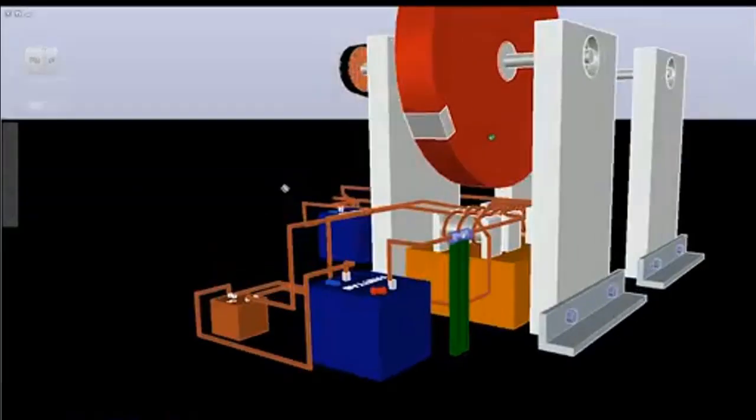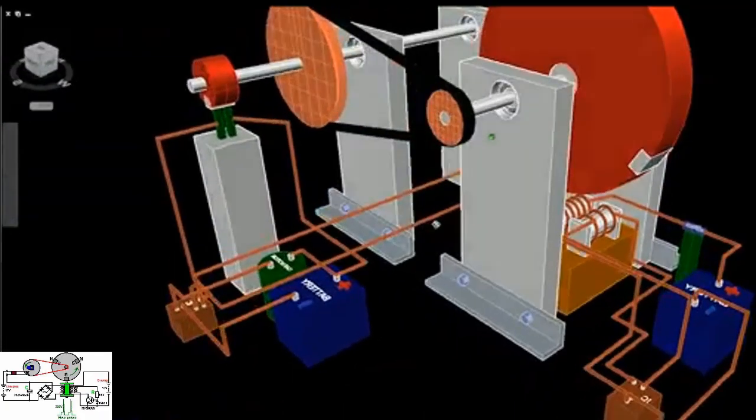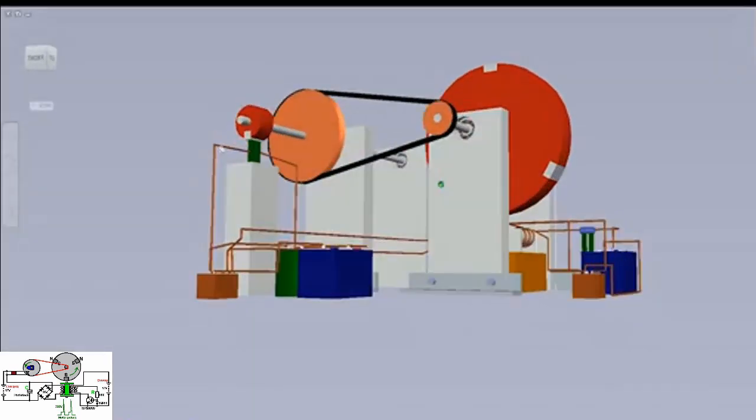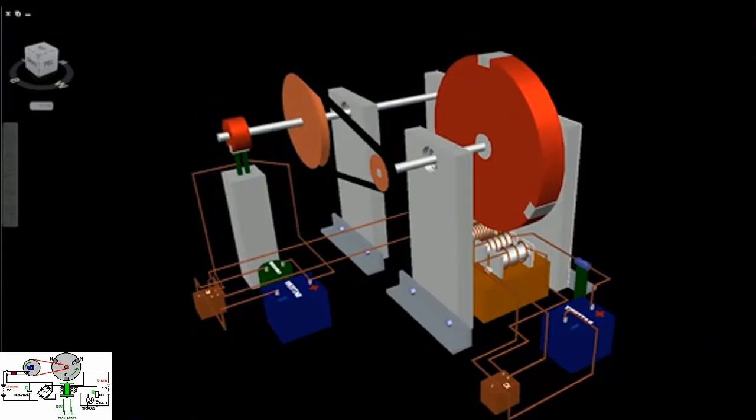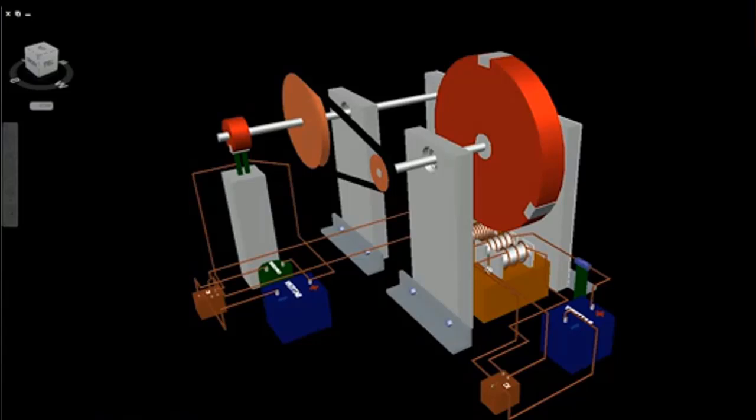John Bedini's self-running generator is a testament to innovative engineering and the potential of free energy systems. By understanding its components and processes, enthusiasts and researchers can appreciate its significance and explore modern adaptations of this groundbreaking technology. Whether through meticulous replication or simplified assembly, the principles behind Bedini's invention continue to inspire advancements in sustainable energy solutions.